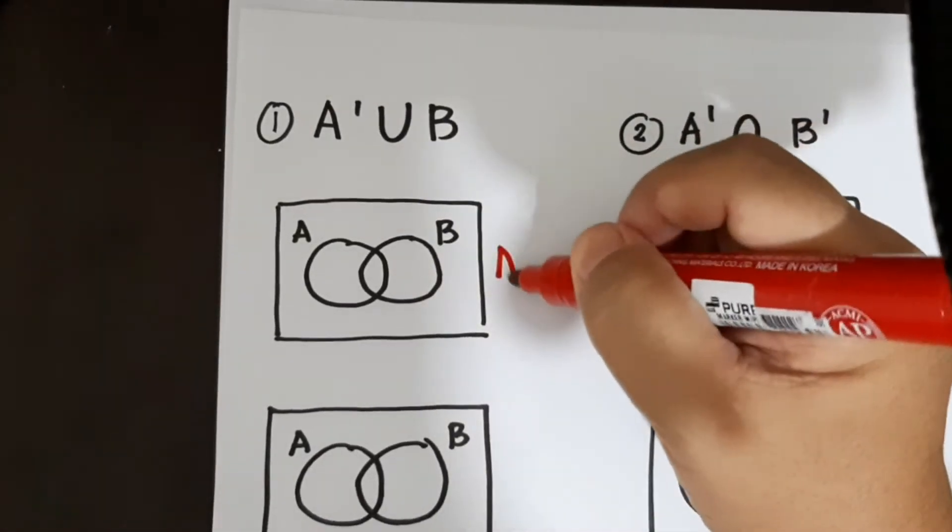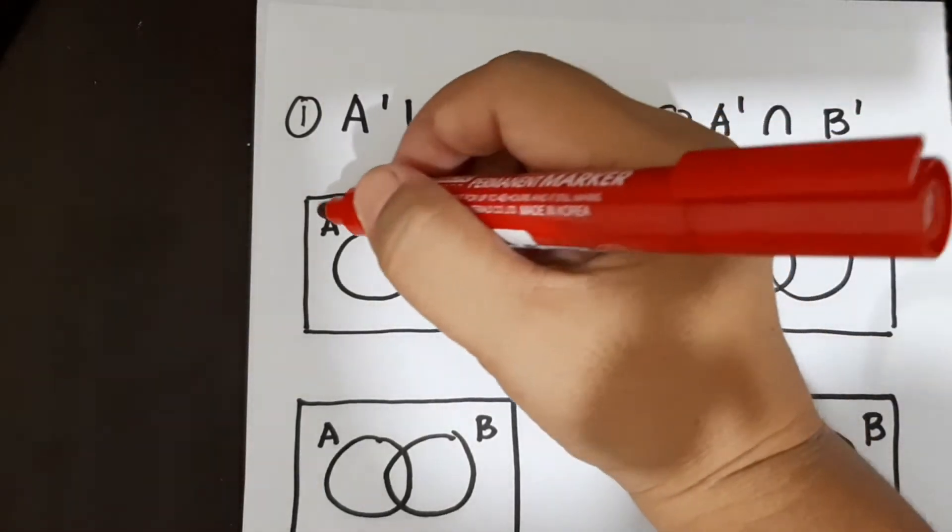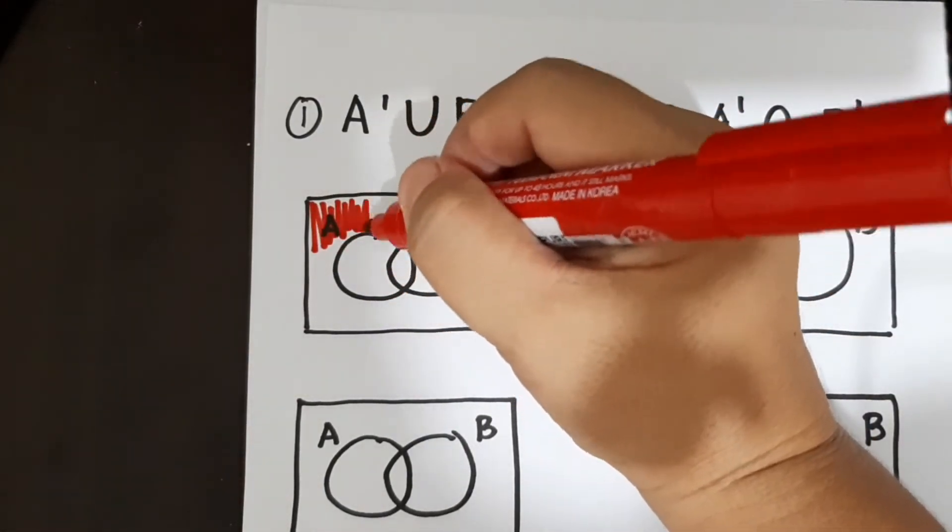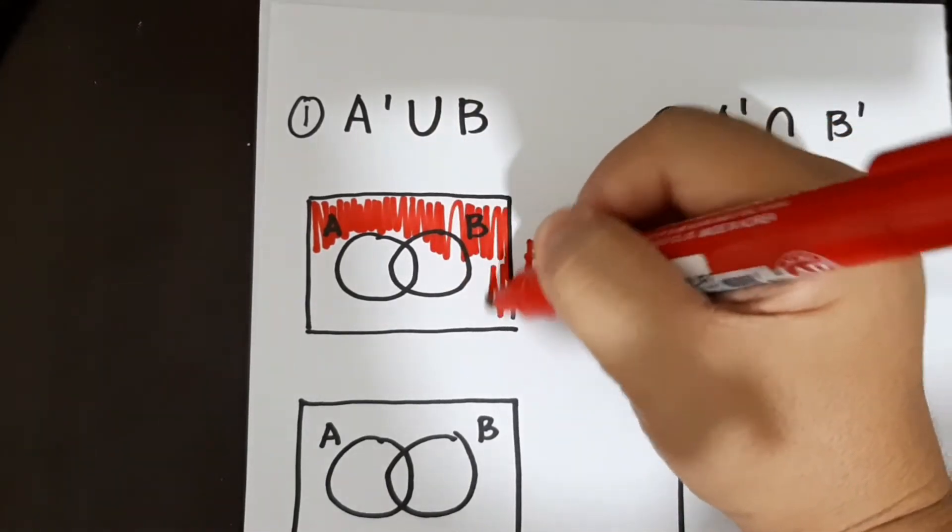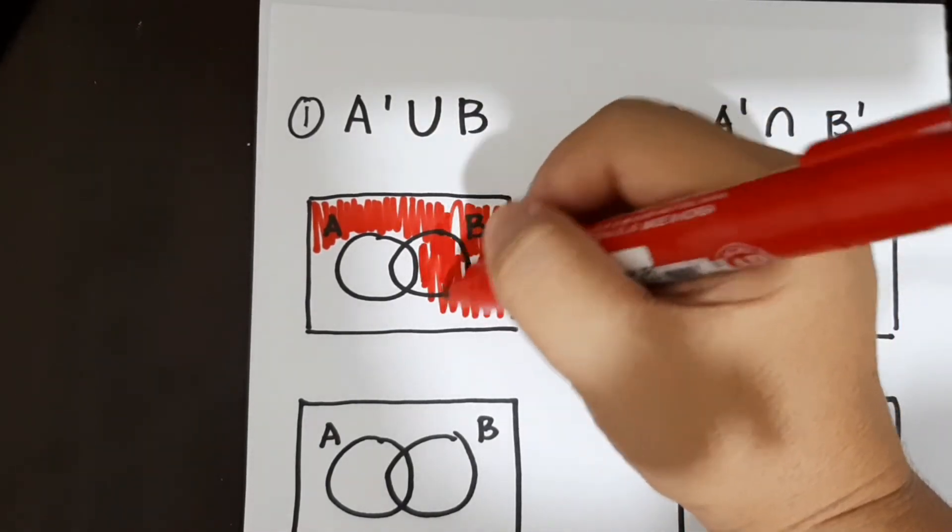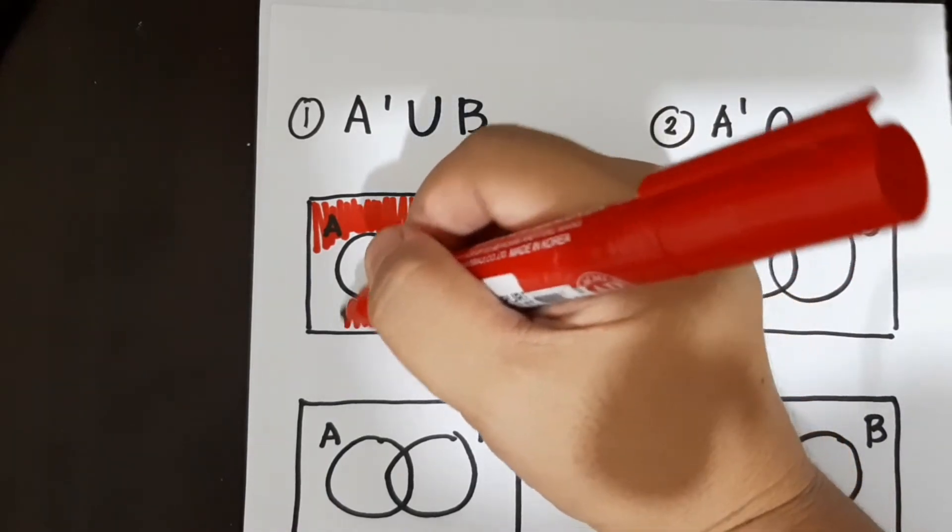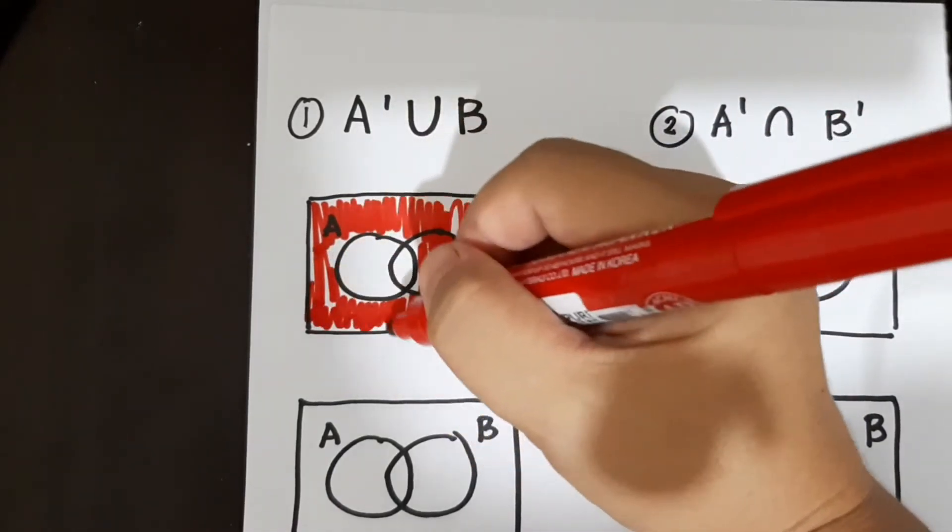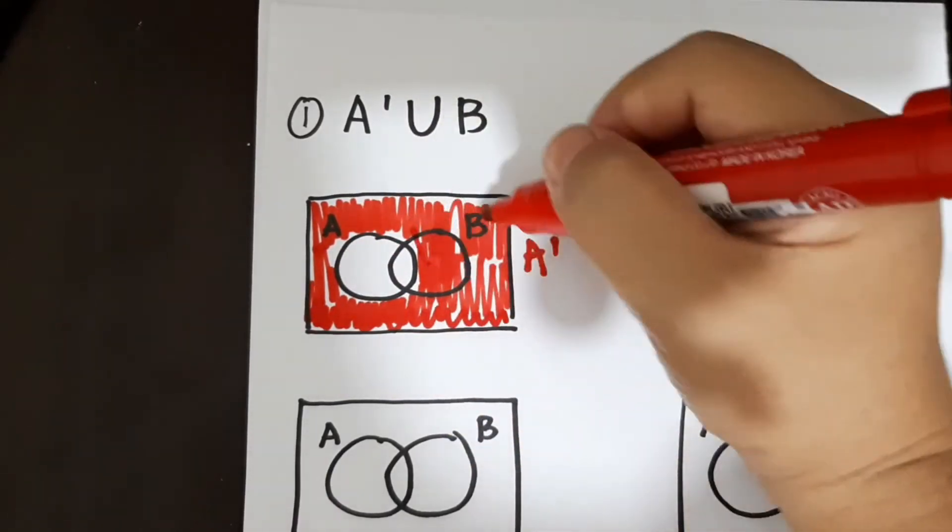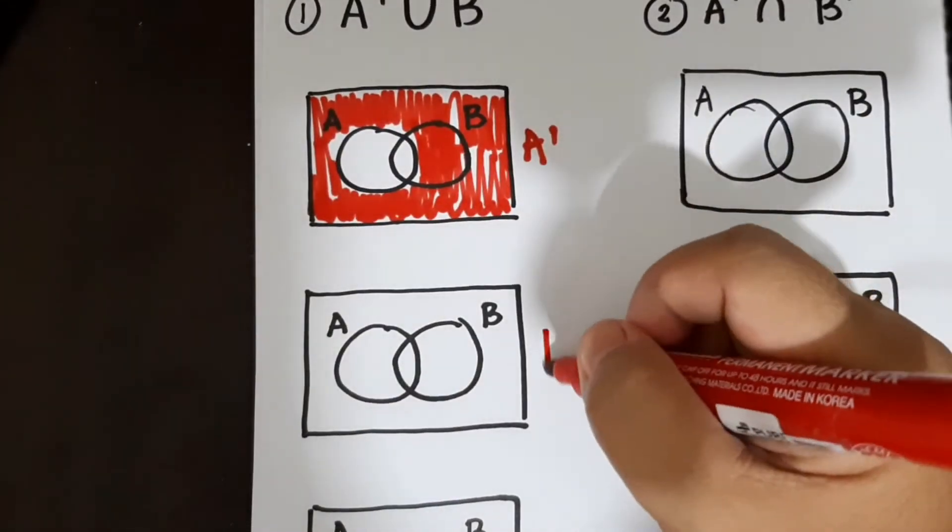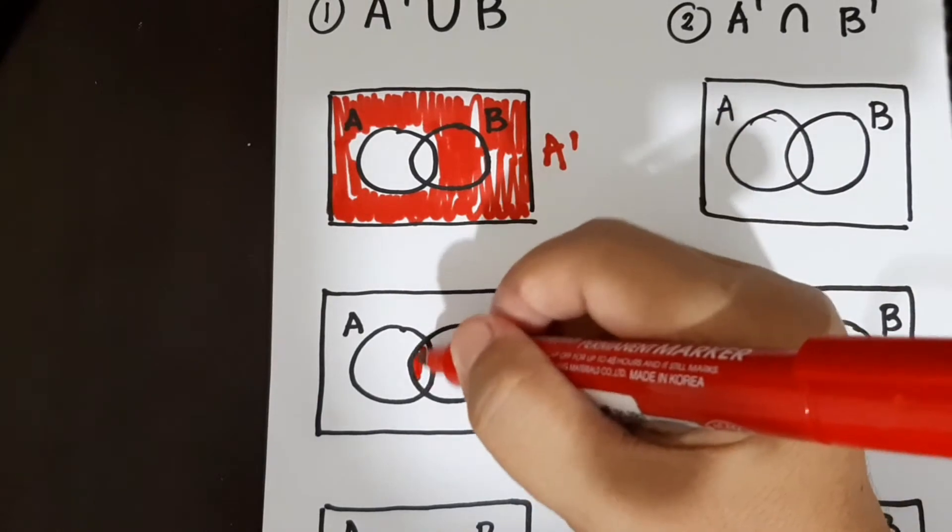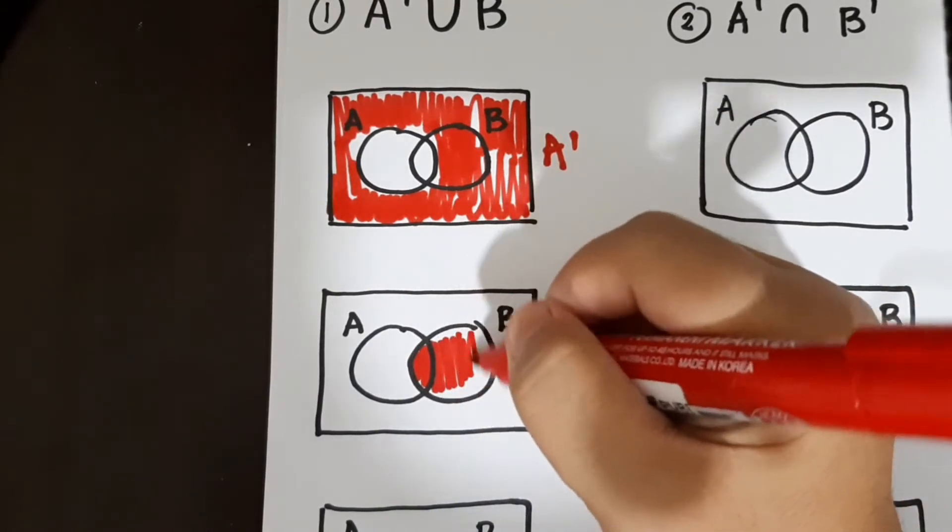So not A muna tayo. Not A. Okay, again, ang walang shade lang ay yung set A. Not A, and then set B. So yung set B lang ang may shade. Pagkaganyan, B lang.